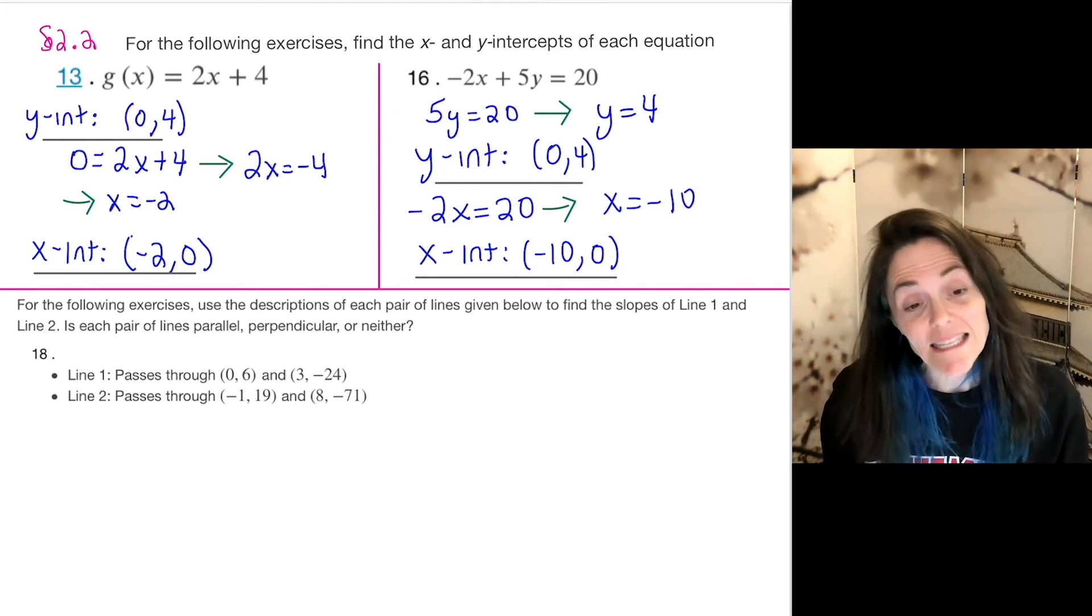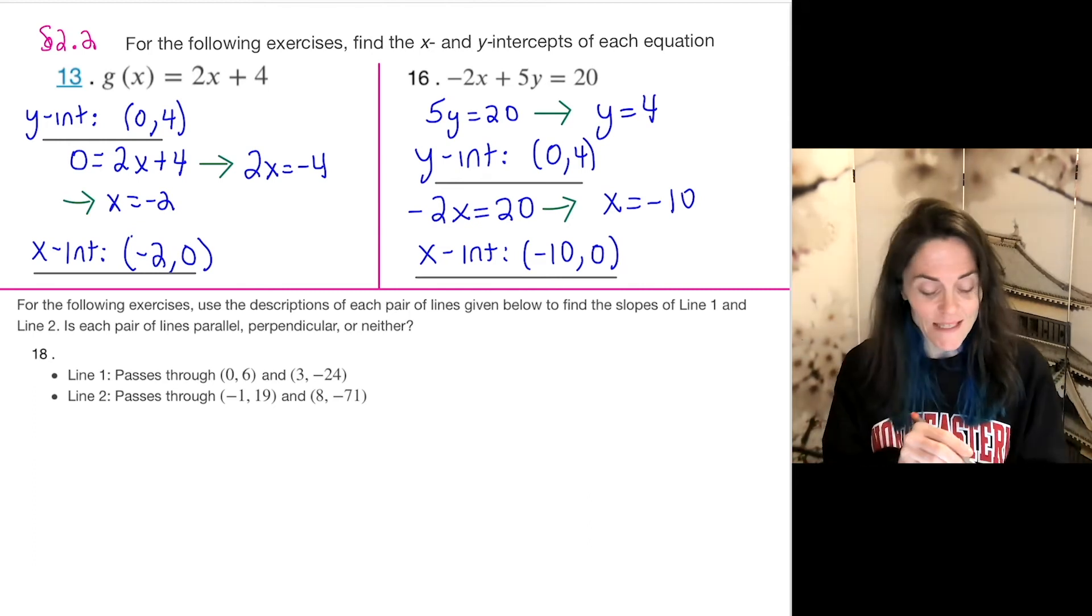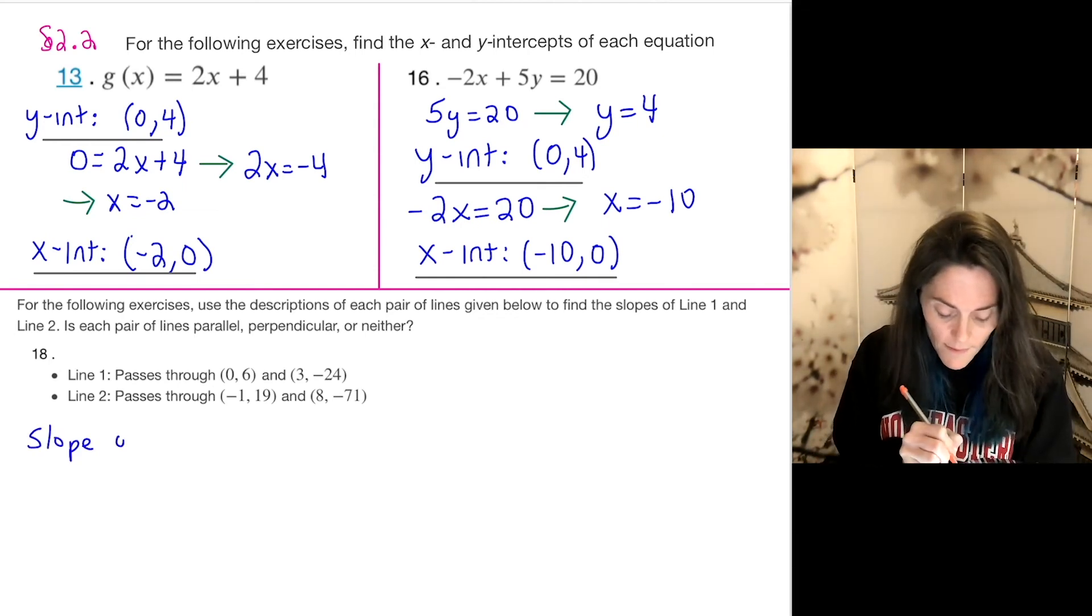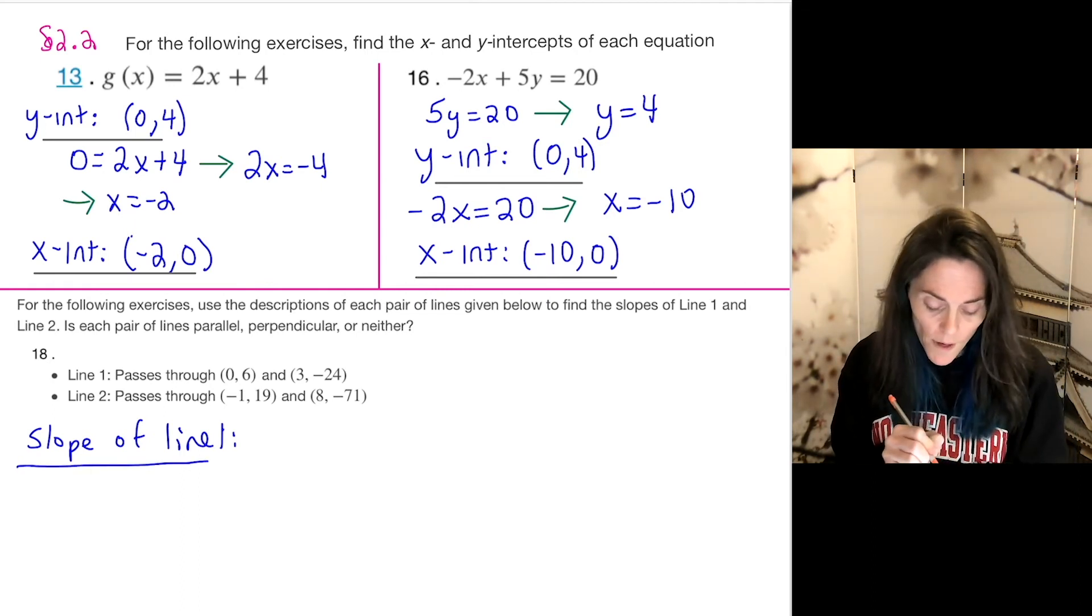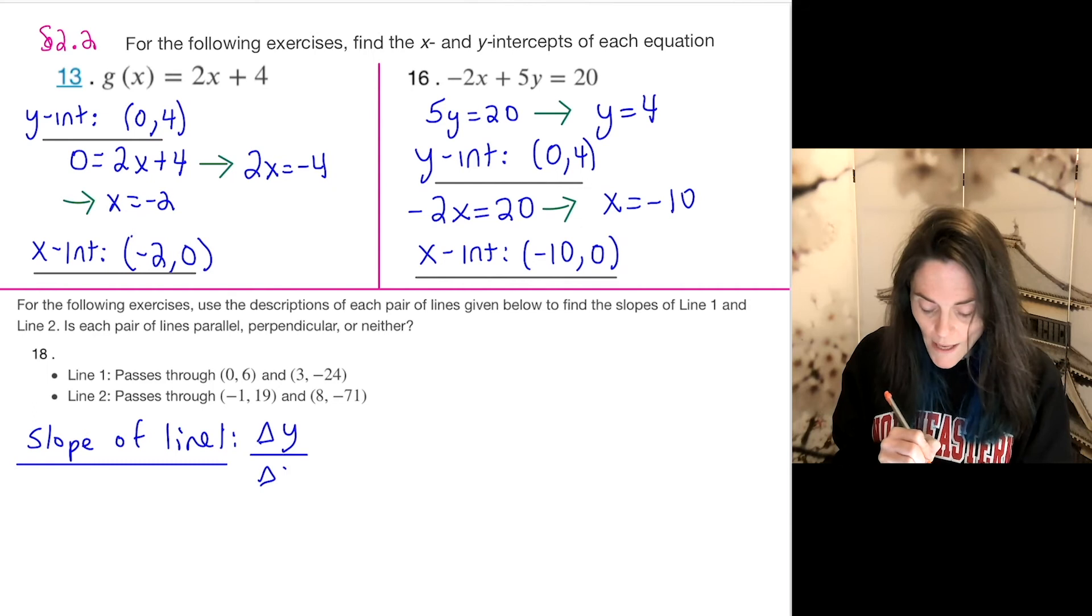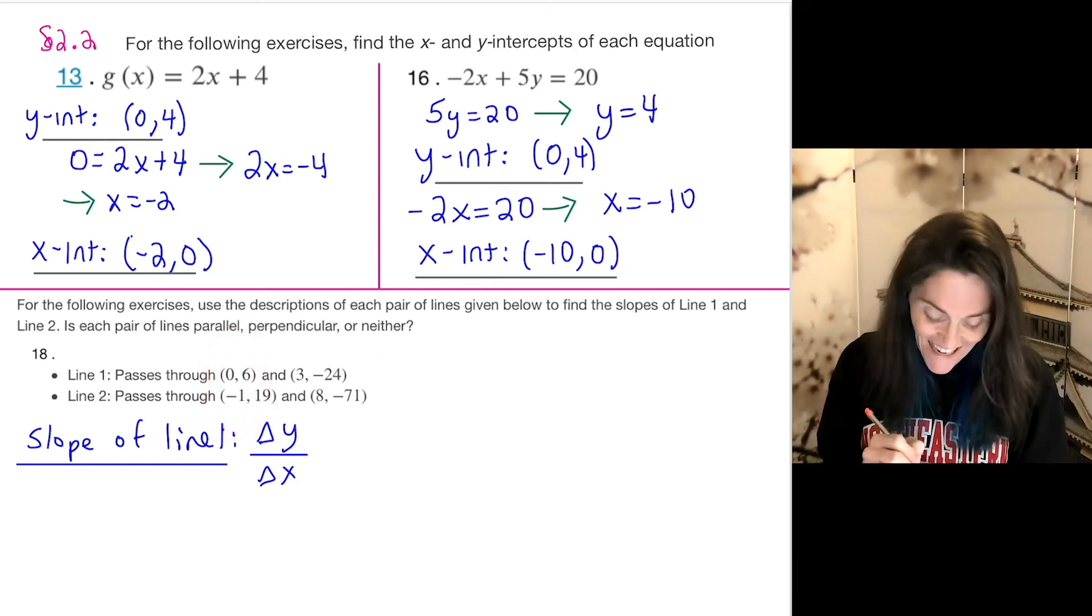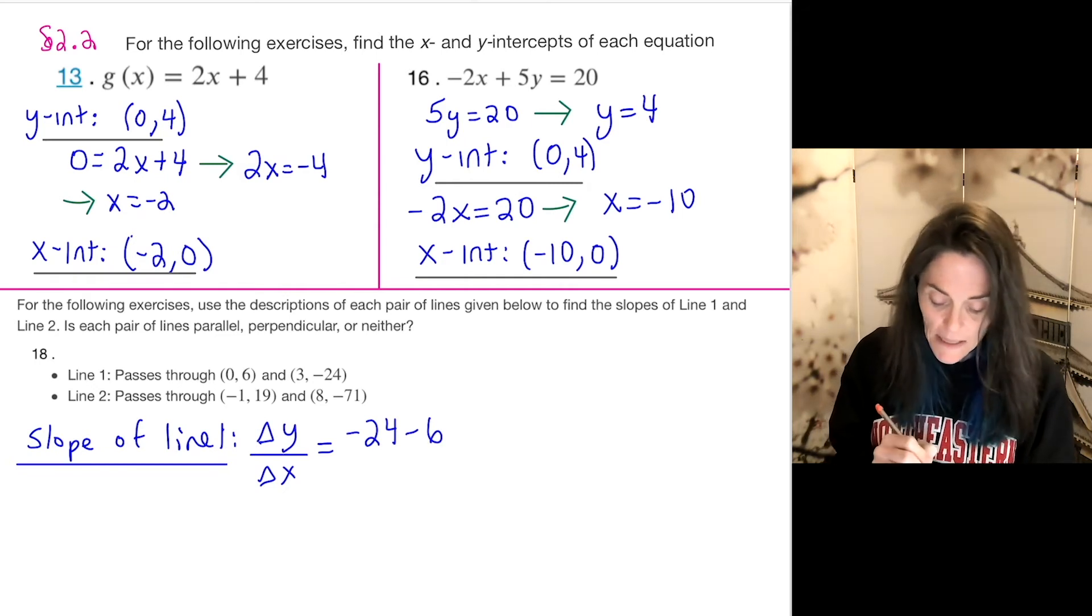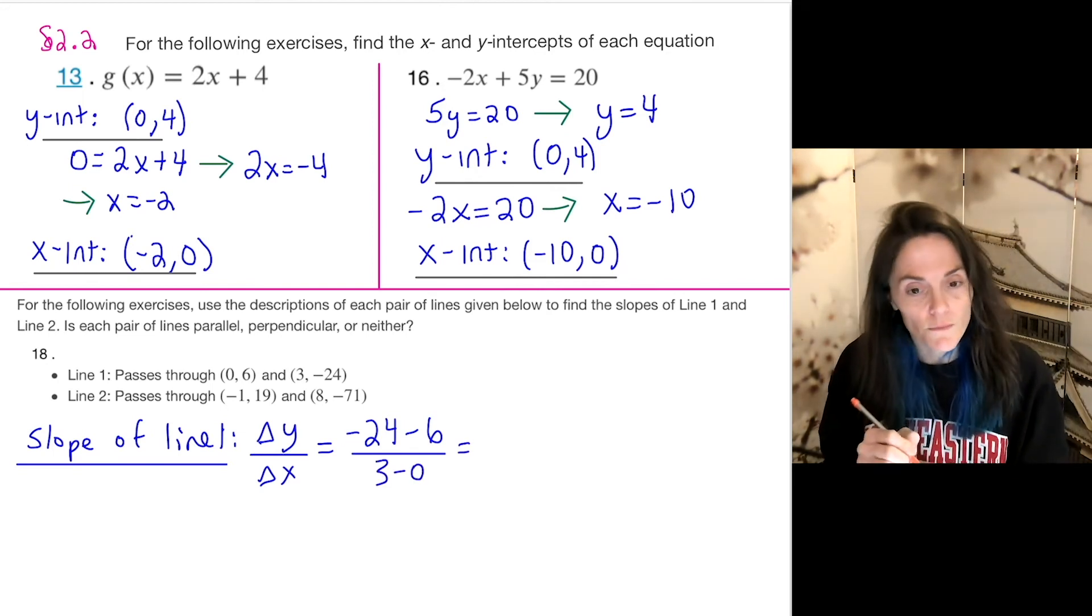Our next exercise, number 18, this has to do with having two points on a line finding the slope, but also the ideas of parallel and perpendicular, which we discussed in the lesson. So what I'm going to do is find the slope of line one, find the slope of line two, and then we will answer the question about parallel, perpendicular, or neither. Slope of line one, change in y over change in x. You can label them y1, x1, y1, x2, y2. I will just take the first two to be x1, y1, and the second two to be x2, y2. So I have minus 24 minus 6 divided by 3 minus 0. You notice this is negative 30 over 3, so I have negative 10.